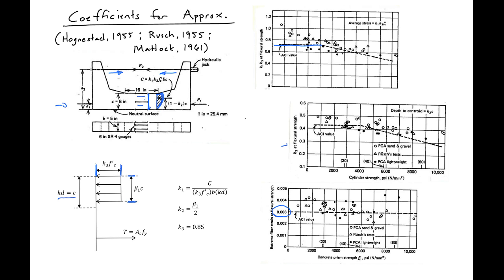So they found K1 to be dependent on our total compression forces and also a factor of K3 and the depth of our neutral axis. K2 is beta1 over 2, which is our code value, and then K3 was .85.